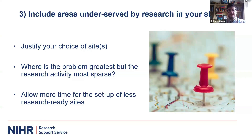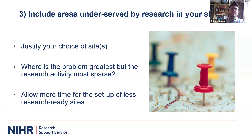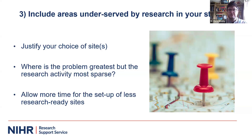Step three: include underserved areas. Usually researchers want to conduct research at their own site because they're aware of the infrastructure, but increasingly we want diverse sites so research isn't just relevant to one local area. Consider where the problem is worst geographically — urban, coastal, or rural — while being aware that other sites may need more time to set up in terms of research ethics and governance, and that this also has cost implications.